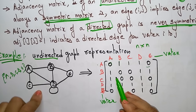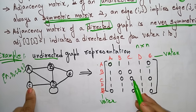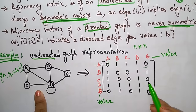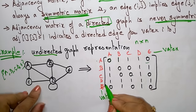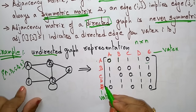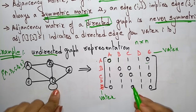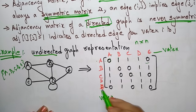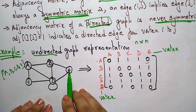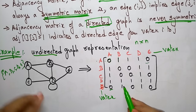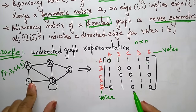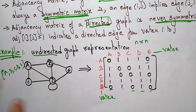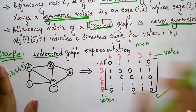C to a - there is no connection, 0. C to b - no connection, 0. C to c - no loop, 0. C to d - 1. C to e - no edge, 0. D to a - 1. D to b - 1. D to c - 1. D to d - there is a self loop, so 1. D to e - 1. All connections for d are present. E to a - 0. E to b - 1. E to c - no edge. E to d - 1. E to e - no self loop, 0. This completes the matrix for the undirected graph.